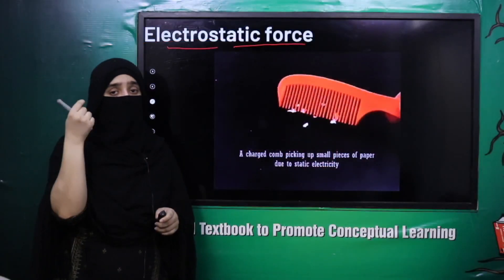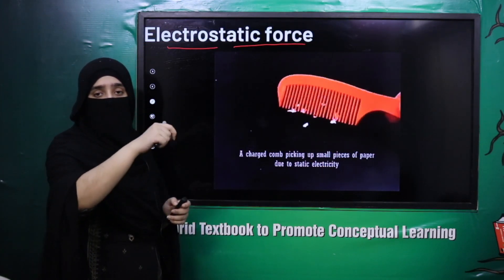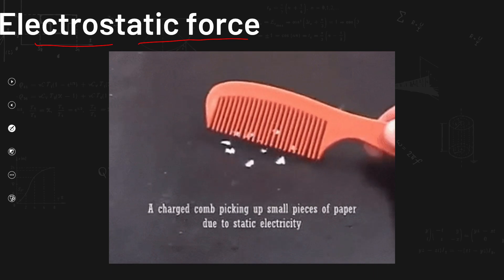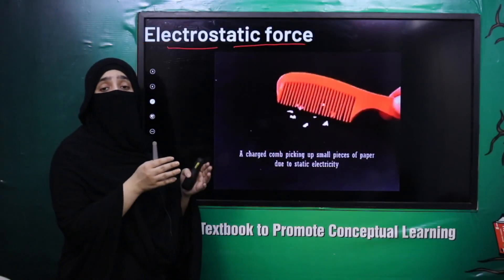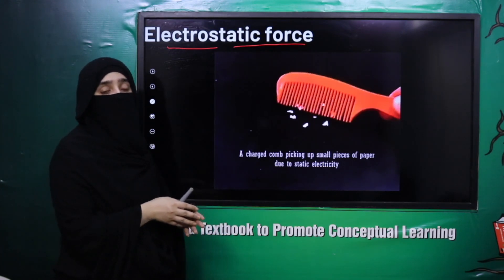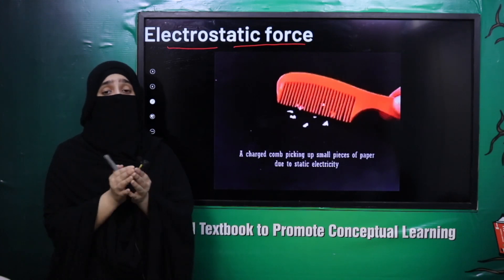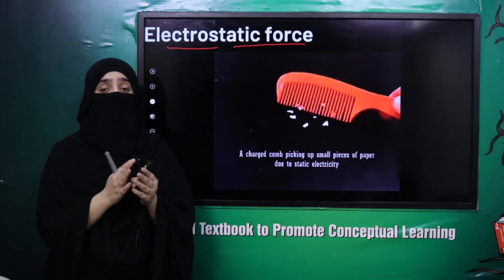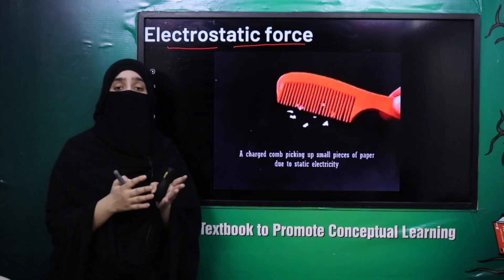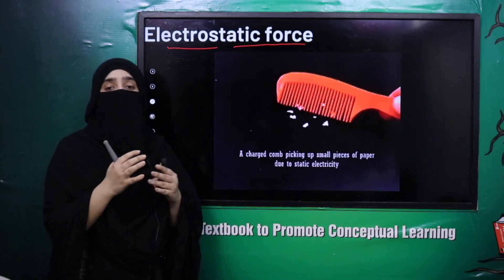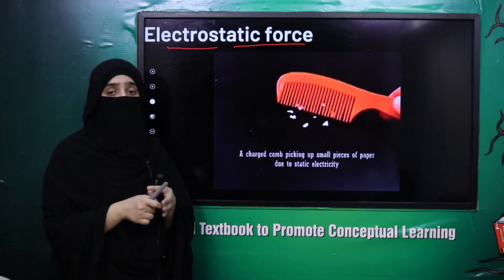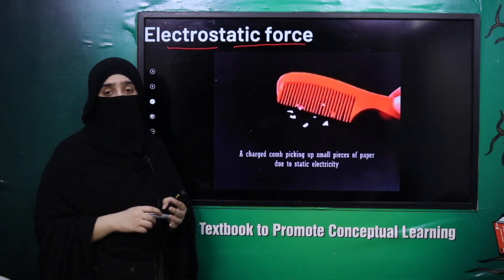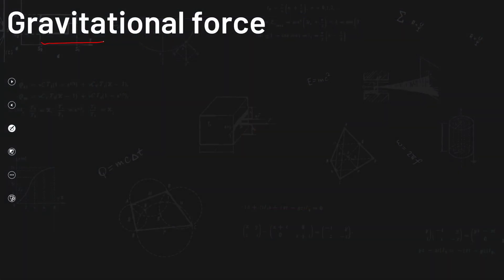Next is electrostatic force. When you use a comb in your hair and bring it near small pieces of paper, the paper pieces are attracted toward the comb. This happens because the comb gets charged and the paper pieces also get a charge — negative and positive charges attract each other. This force is applied without any connection. This force is called electrostatic force. This is an example of non-contact force because there is no direct interaction between the comb and the paper pieces.